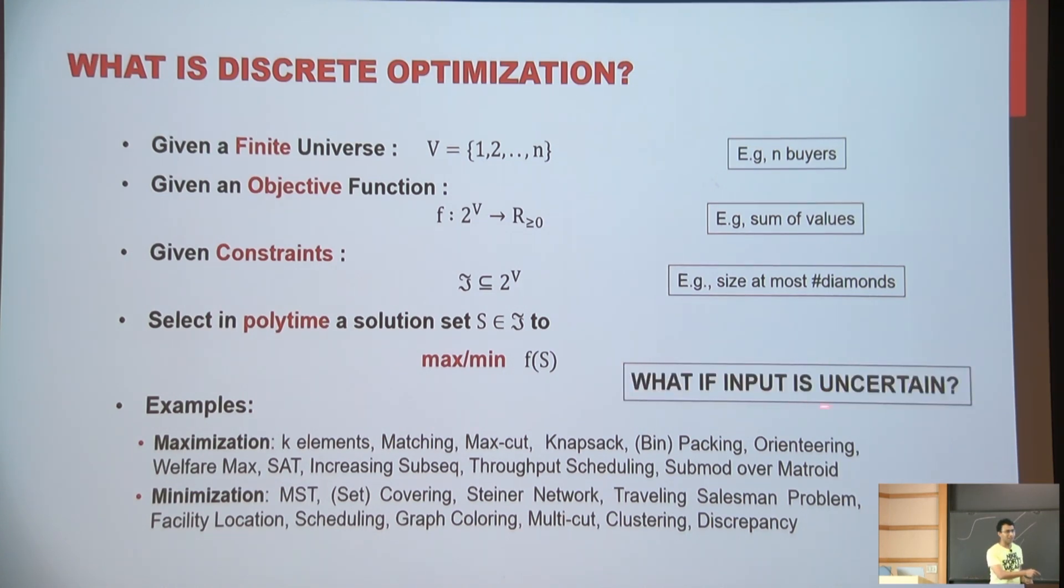The focus today is, what if there's some kind of uncertainty to solve these discrete optimization problems? In particular, I'll focus on very simple discrete optimization problems. Like for example, selling a single diamond, which is trivial in the case where you know all the values.